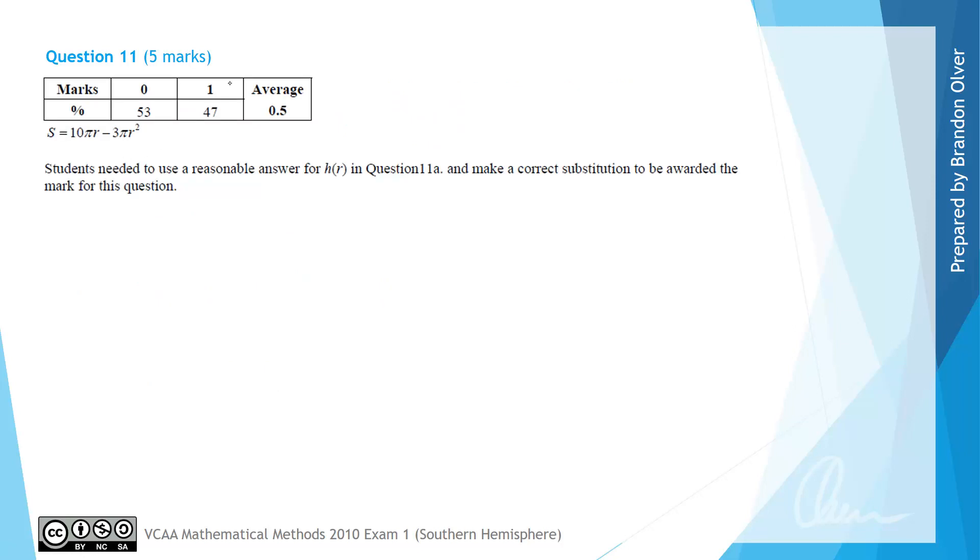From the examiner's report we can see that 47% of students managed to get this correct, even though only 11% got full marks on the previous question. Which meant that students were able to use a reasonable answer for h of r in question 11a to make the substitution and then be awarded marks for this question.